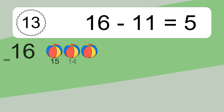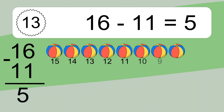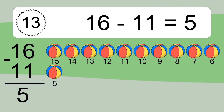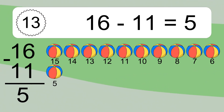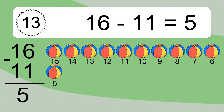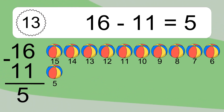16 minus 11 equals what? 16 minus 11 equals 5. Let's count it: 15, 14, 13, 12, 11, 10, 9, 8, 7, 6, 5.